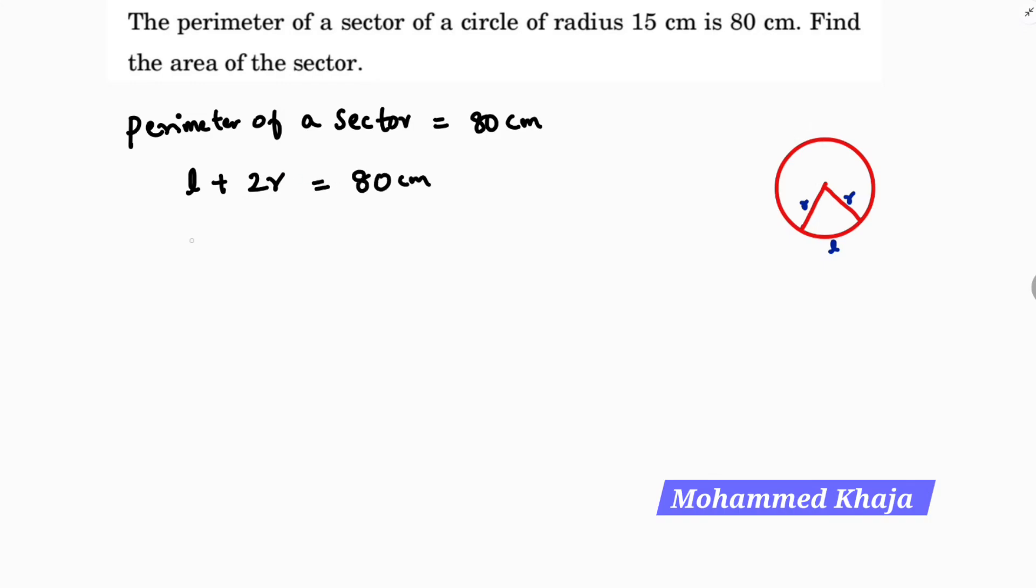As I have the radius, I can easily get the length of an arc. 2 times 15 equals 30, so L plus 30 equals 80. L equals 80 minus 30, L equals 50 centimeters. So length of an arc is 50 centimeters.